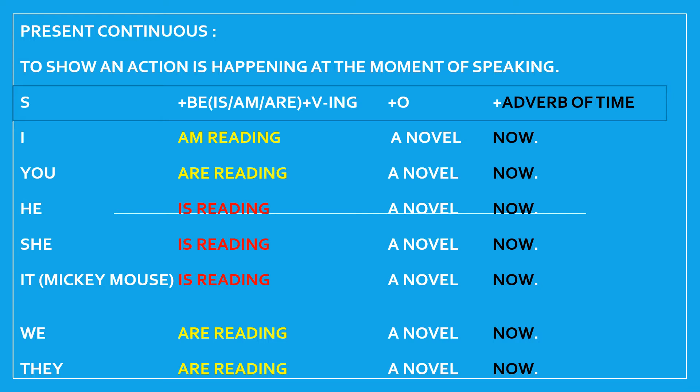Let's see the formula for present continuous. The formula for present continuous consists of: is/am/are plus verb-ing. It means that the event is in progress. For example, 'I am reading' — where 'I' is the subject and 'reading' is the present continuous form (am plus verb-ing). The object in the sentence is 'a book.' 'Now' is the adverb of time used with present continuous.